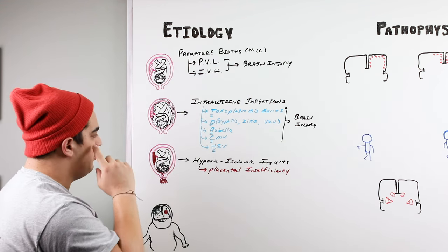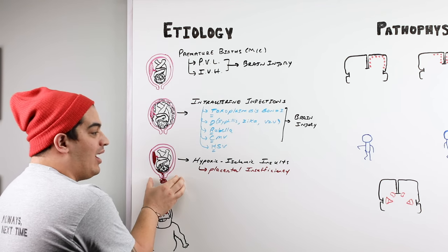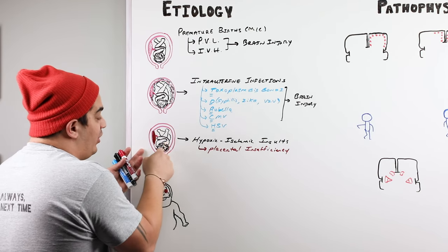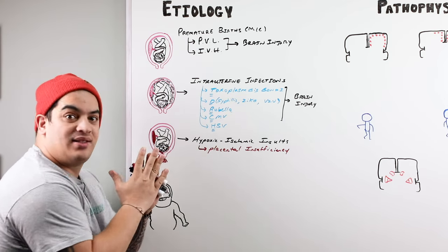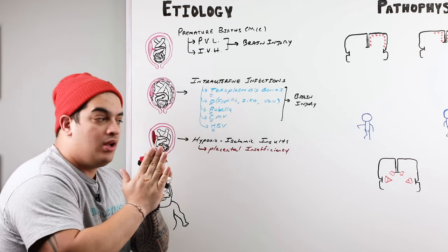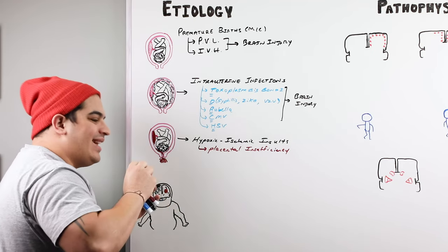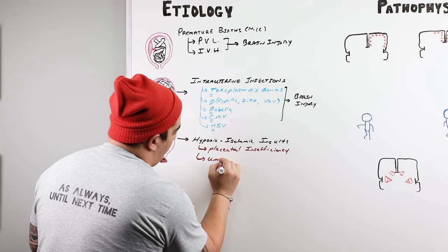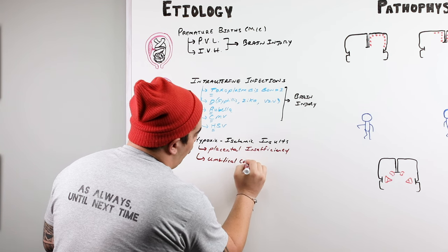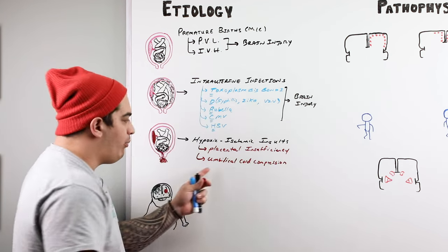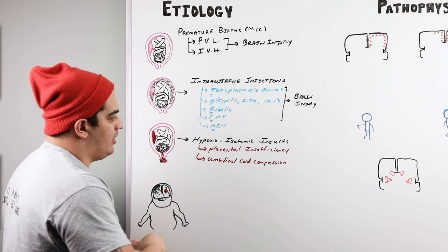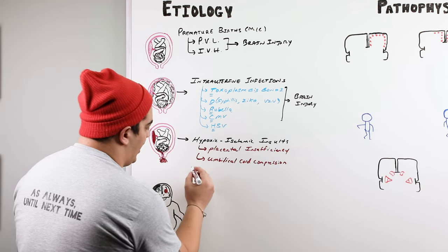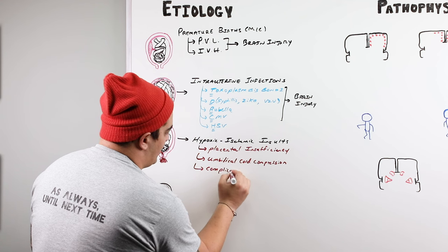Sometimes it's not the process before birth but actually during the birthing process itself. During this time, maybe the cord gets compressed — either during the birthing process or prenatally — compressing actual blood flow to the fetus. If that umbilical cord compression is chronic or prolonged, you're really depriving the fetus of oxygen. You could even say complications that arise from labor itself.